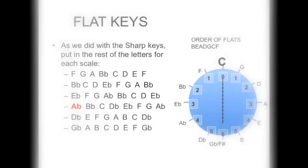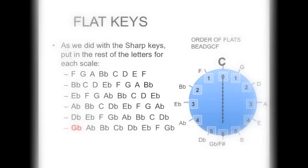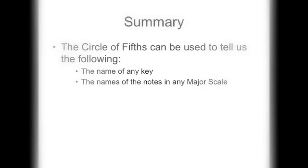A flat has four flats: B, E, A, and D — put a flat next to those four letters on the A flat line. D flat has five flats — the number five is next to D flat on the circle of fifths — so flatten B, E, A, D, and G. Our last one is G flat, which has six flats: B, E, A, D, G, and C — put a flat next to those letters on your G flat line, and you're done.